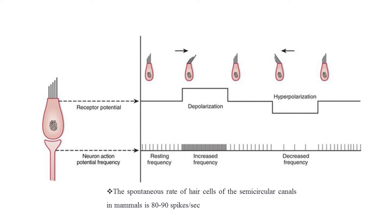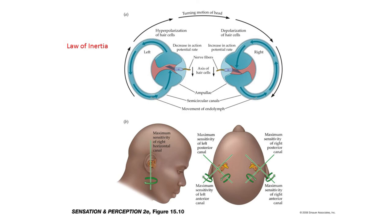When the head is not moving and is at rest, some of the tip links are partially open — not completely closed. So even at rest, there are some action potentials always present in the vestibular neurons. The spontaneous firing rate of hair cells in the semicircular canals in mammals is around 80 to 90 spikes per second. So during depolarization, the firing rate increases even further beyond this spontaneous baseline.